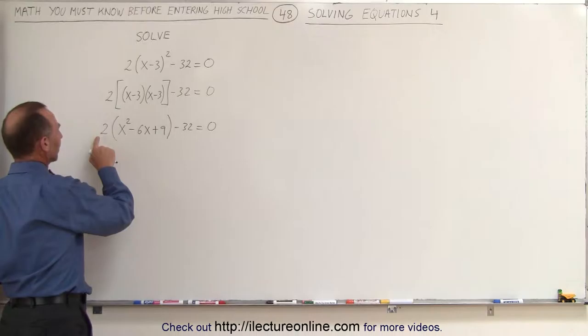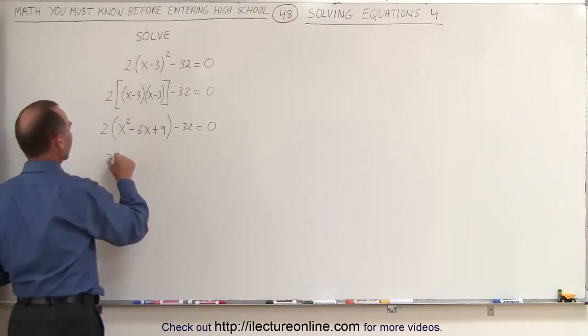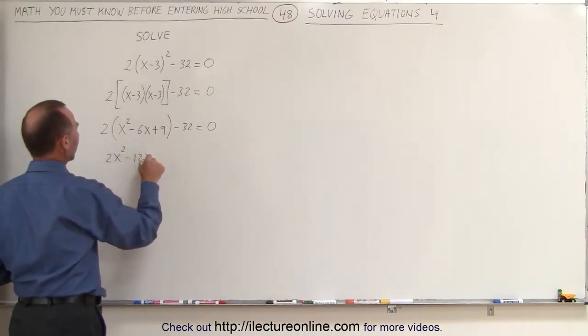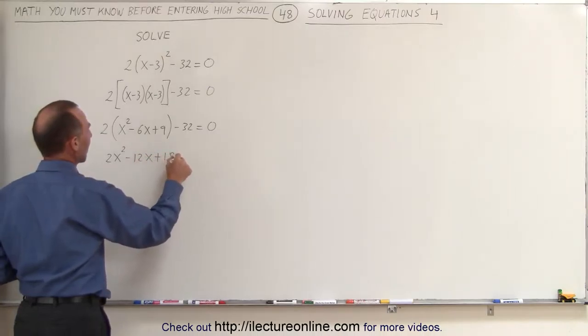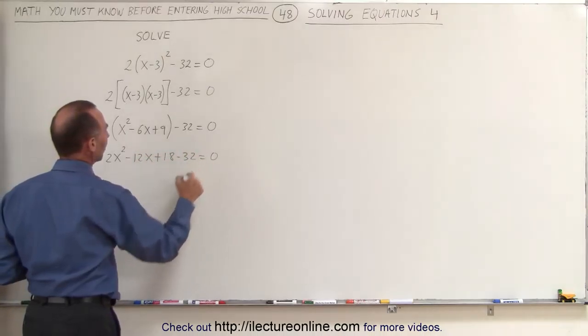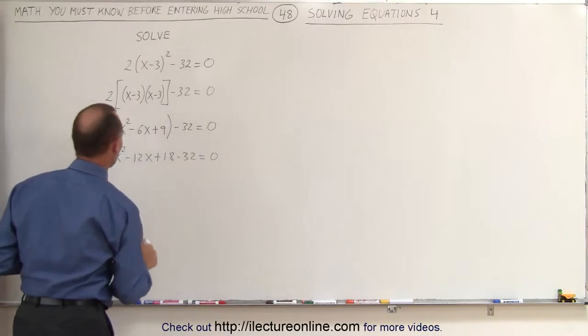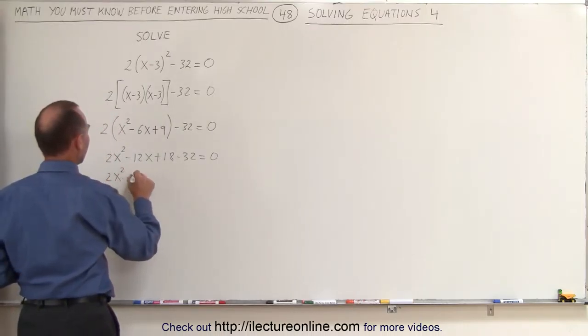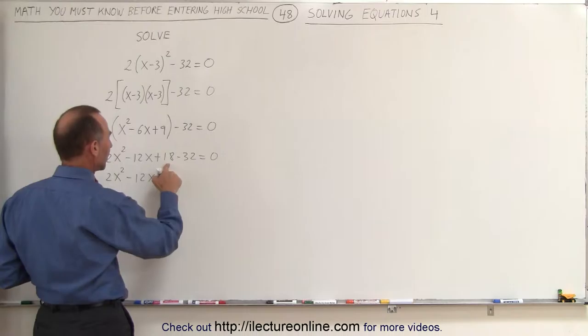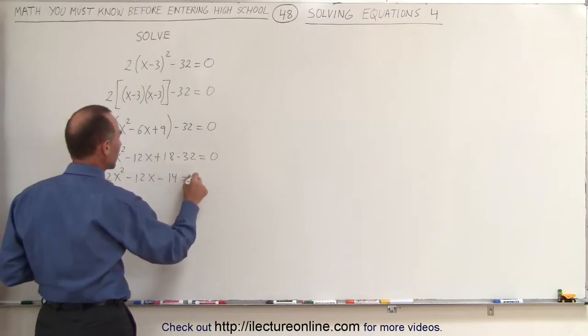And now we're going to multiply this through. So we get 2x squared minus 12x plus 18 minus 32 equals 0. And now we can combine these terms and we get 2x squared minus 12x minus 14 equals 0.